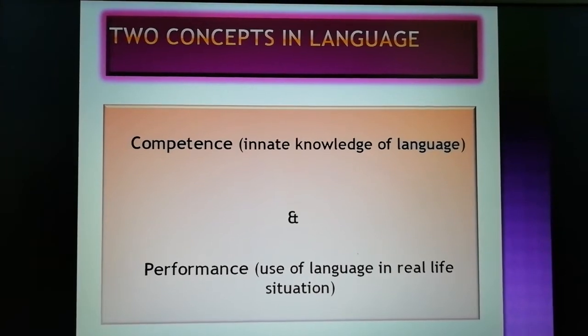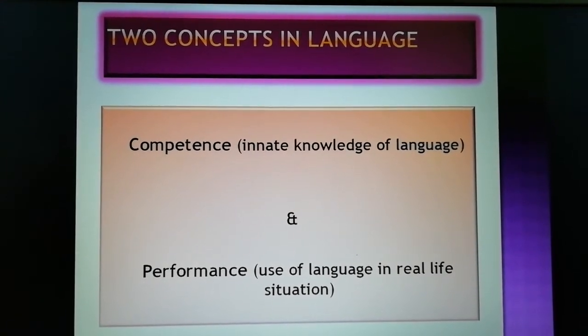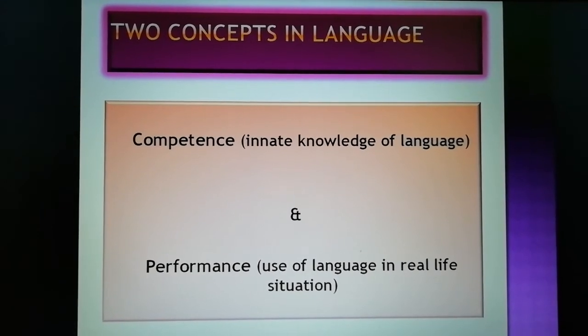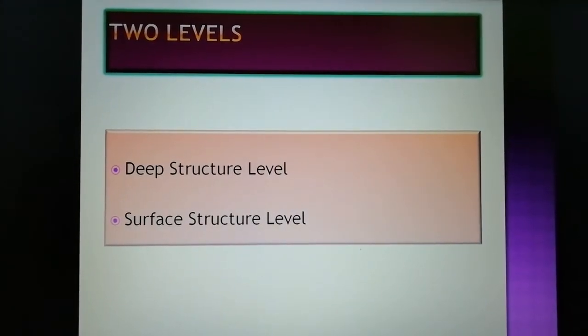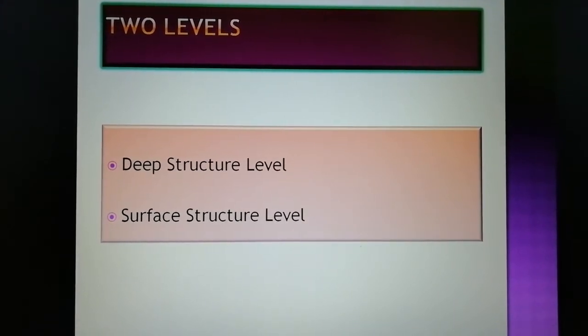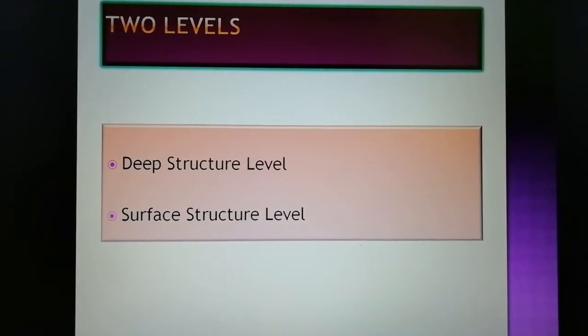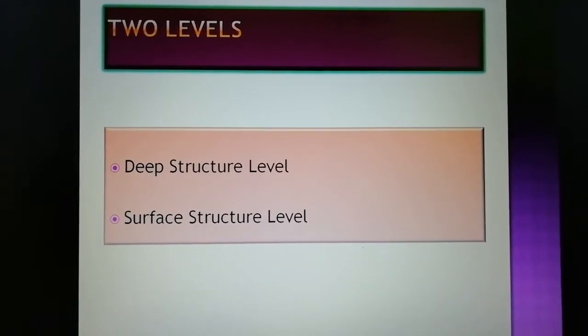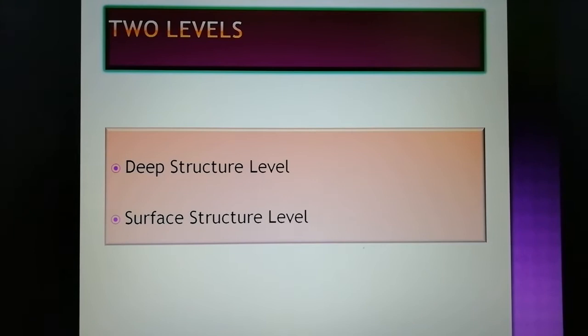Chomsky also explained the two levels in language at which grammatical analysis is carried out. These two levels are the deep structure level and the surface structure level. The superficial or apparent structure of sentences is called surface structure, and the underlying structure is called deep structure.